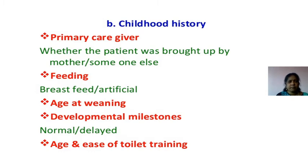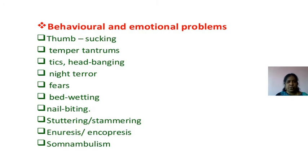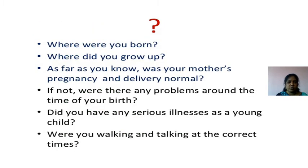Next, childhood history: who is the primary caregiver — is the mother the primary caregiver or someone else? Feeding — artificial or breastfeeding; age of weaning; developmental milestones — normal or delayed; age of toilet training. Behavioral and emotional problems such as thumb sucking, temper tantrums, tics, head banging, night terrors, fears, nail biting, bed wetting, stuttering or stammering, and enuresis. We also ask: where were you born, where did you grow up, was the mother's pregnancy and delivery normal, any serious illness in early childhood, and were you walking and talking at the correct times?